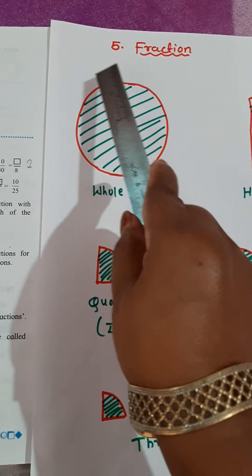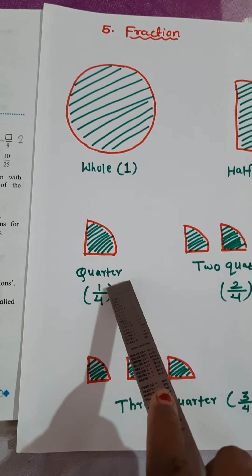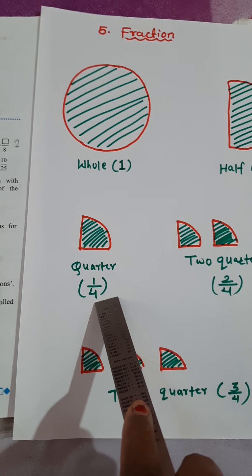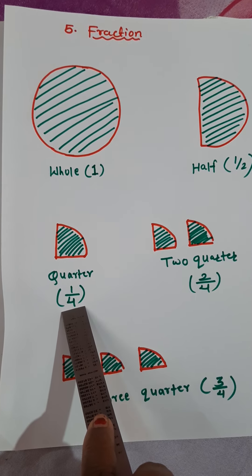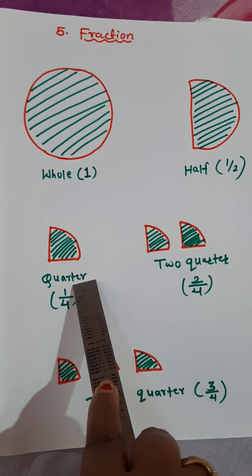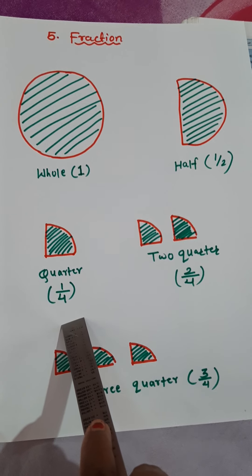If I cut this whole into 4 equal parts and out of 4 equal parts, if I take only 1. This 4, what it indicates? Total parts. Out of 4 equal parts, if I take 1, that is called quarter. And in number 1 upon 4.